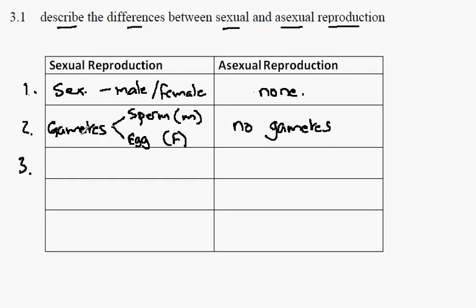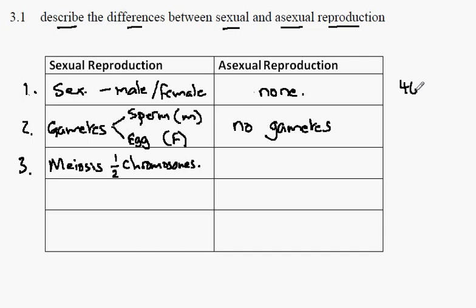The type of cell division that produces gametes is called meiosis. Meiosis has a number of effects, one of which is to halve the total adult number of chromosomes in the gamete cell. In humans, the total number of chromosomes is 46 per cell. However, in gametes, the total number is 23 per gamete cell. Going from 46 to 23 is the process of meiosis. In asexually reproducing populations, there is no meiosis.